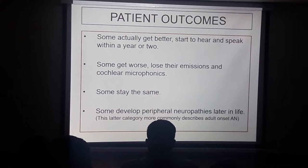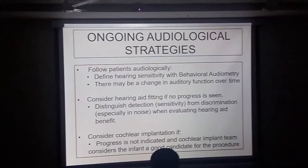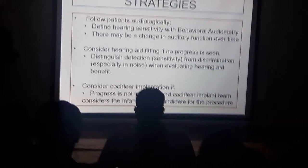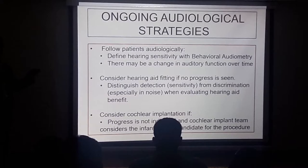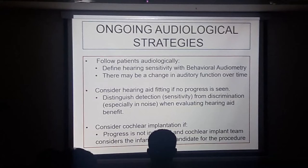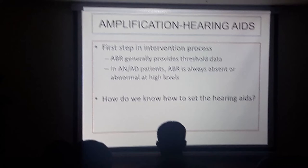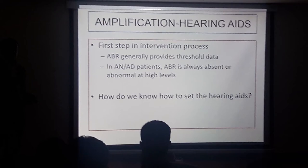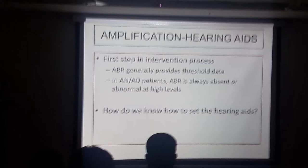What are the ongoing audiological strategies to manage these children? Follow patients audiologically. Hearing aids should be trialed with behavioral audiometry — not just for the detection of sound but also the perception of sound, because the person may be able to detect sound but not understand it. When fitting hearing aids, you need to know the threshold. How do you find a threshold in this child when ABR is absent or abnormal? You may sometimes have to wait and use behavioral threshold measures, which may require waiting until the child is old enough for reliable behavioral testing.